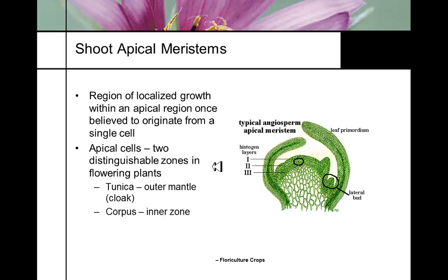In the shoot apical meristem, there are two distinguishable zones in flowering plants: the tunica and the corpus. The tunica is like the outer mantle or surrounding area — similar to a tunic bulb like an amaryllis or onion. Corpus is Latin for body and refers to the internal area. The histogen layers vary by species, with different layers of tissue present depending on the plant.